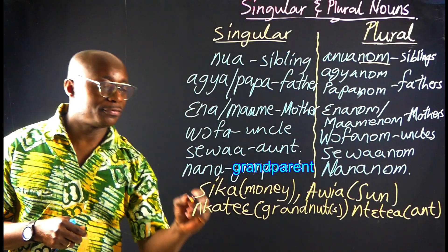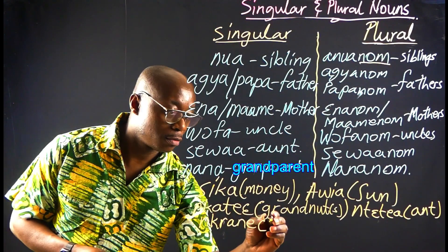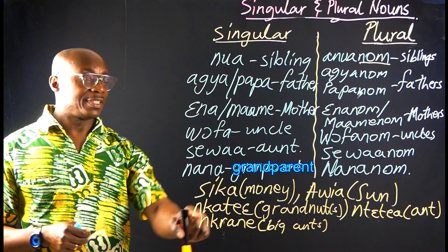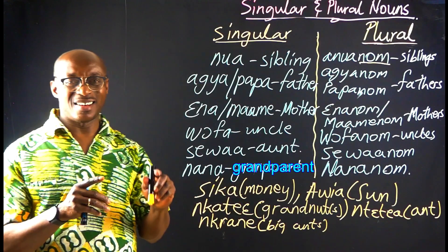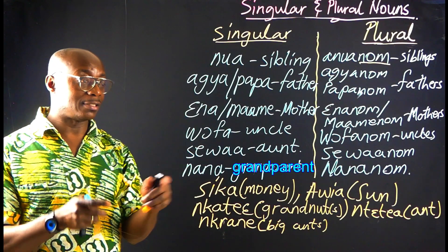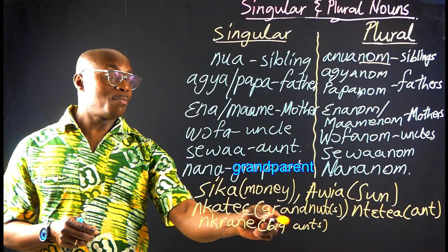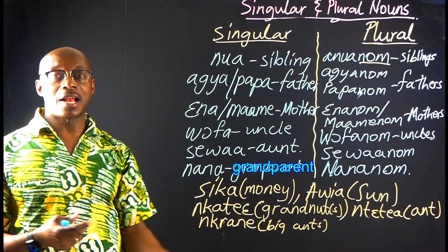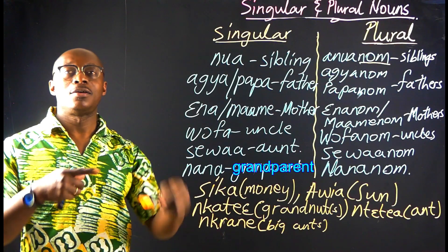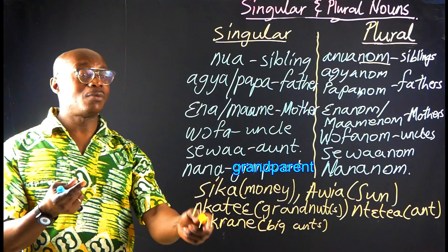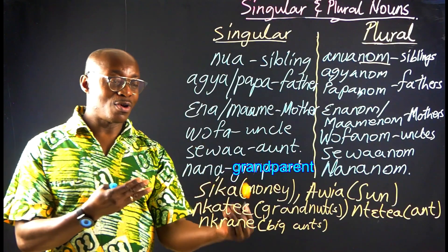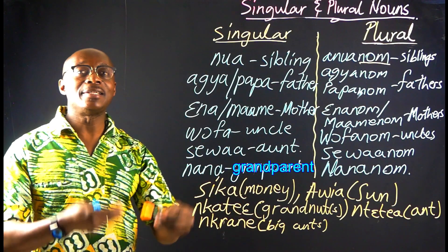We also have Nkani — that is the big ant, and this refers to the big black ant. Whether plural or singular, we say Nkani. One of them, we say Nkani; two thousand of them, we say Nkani. So plural and singular remain the same.